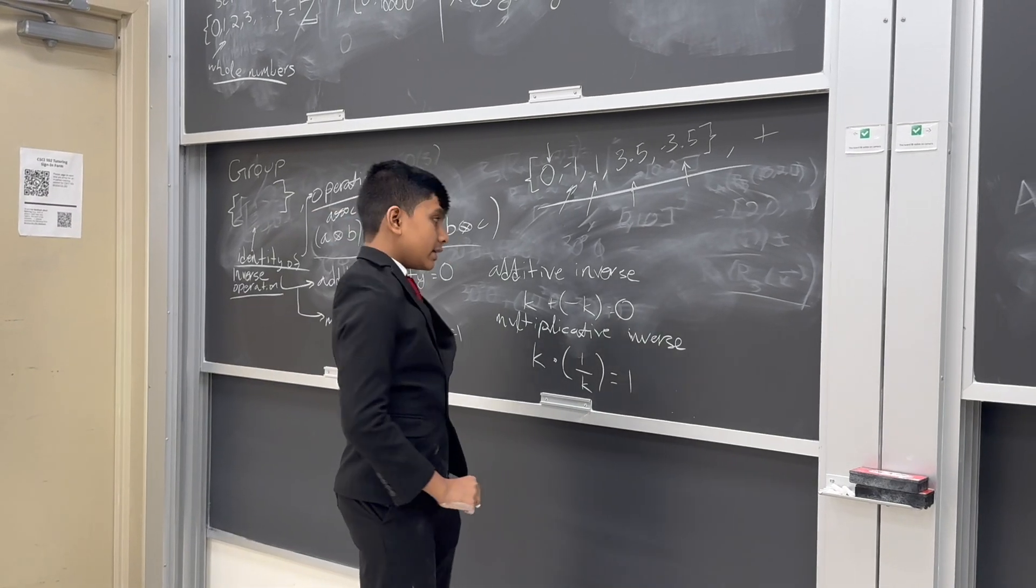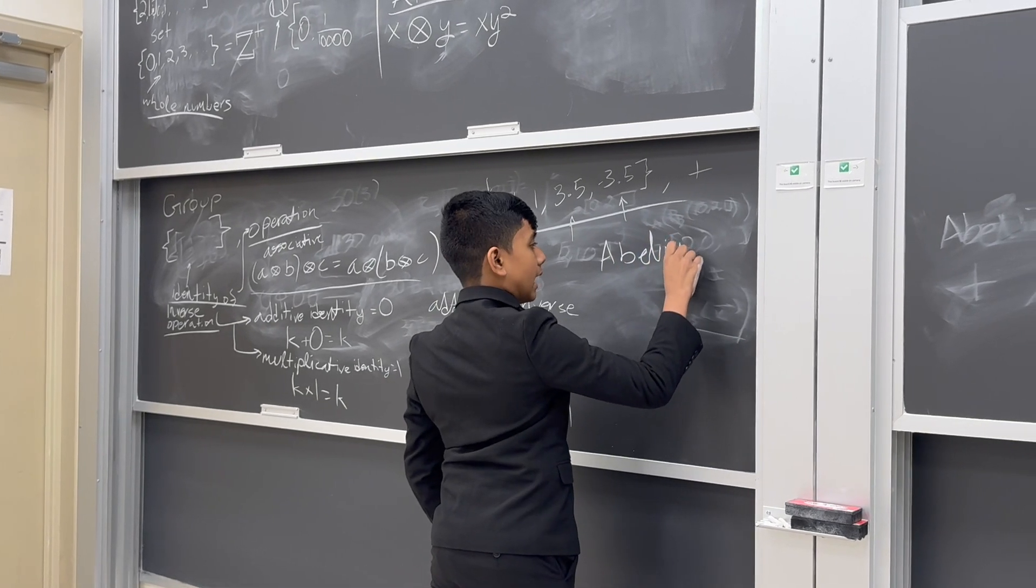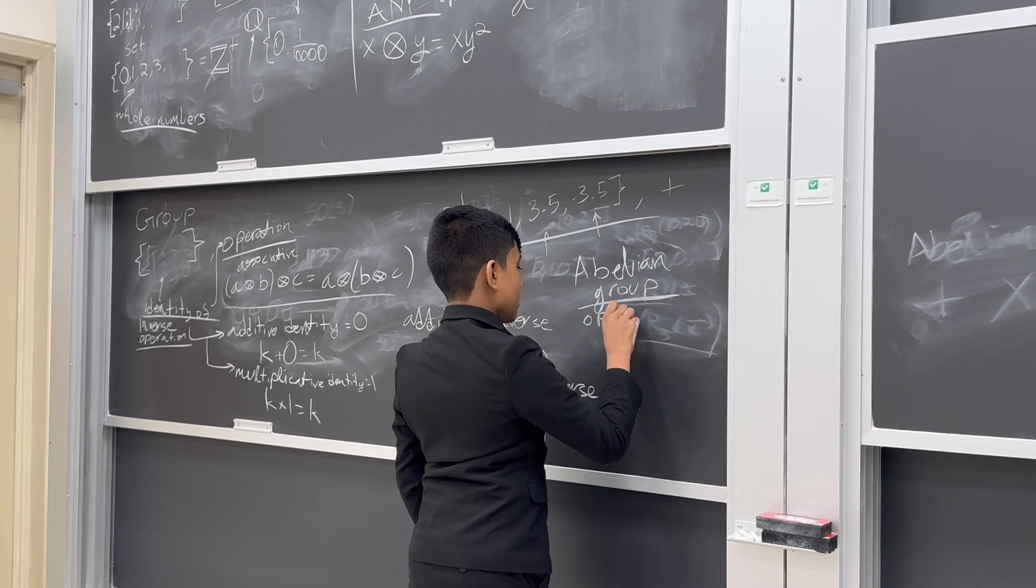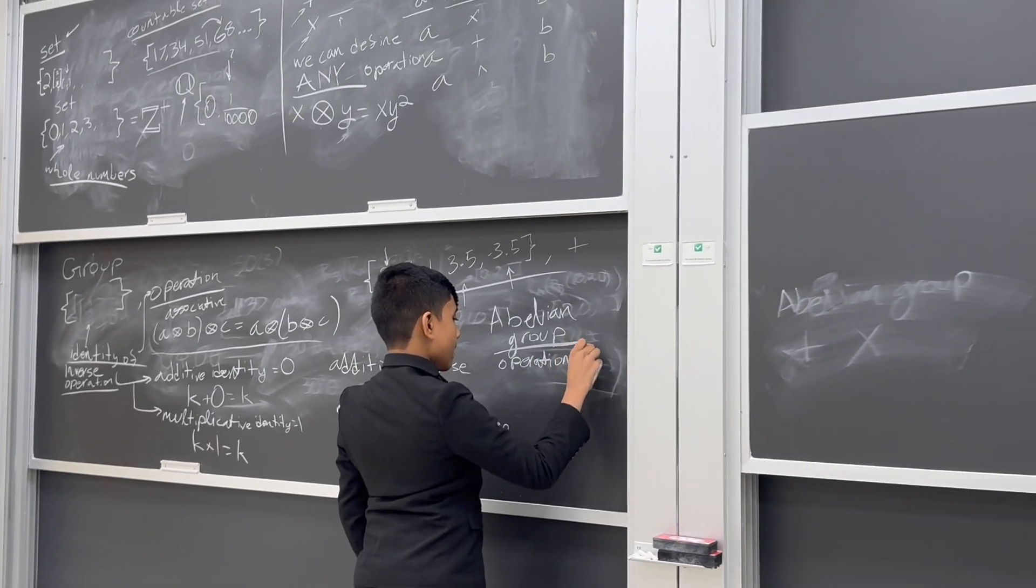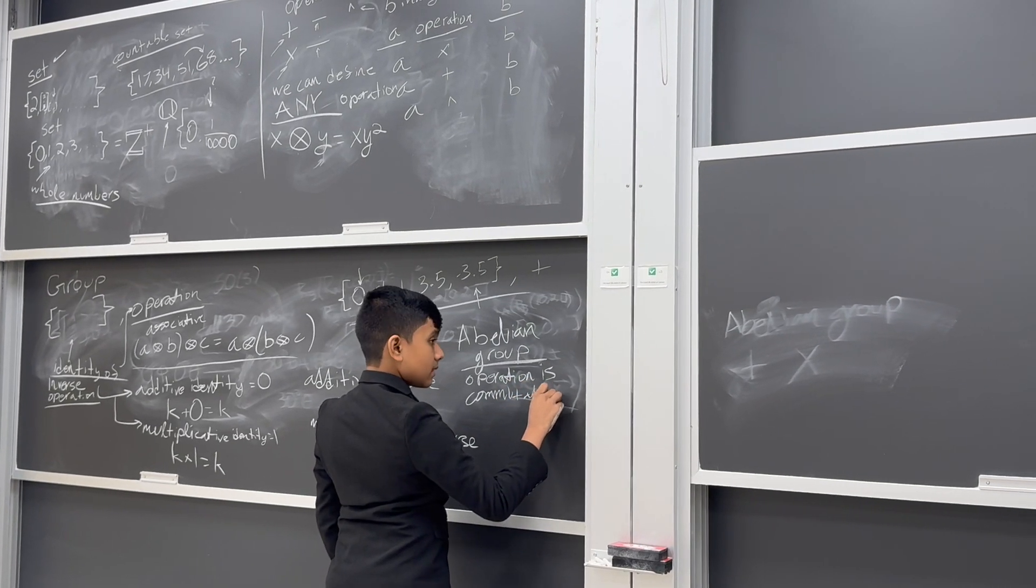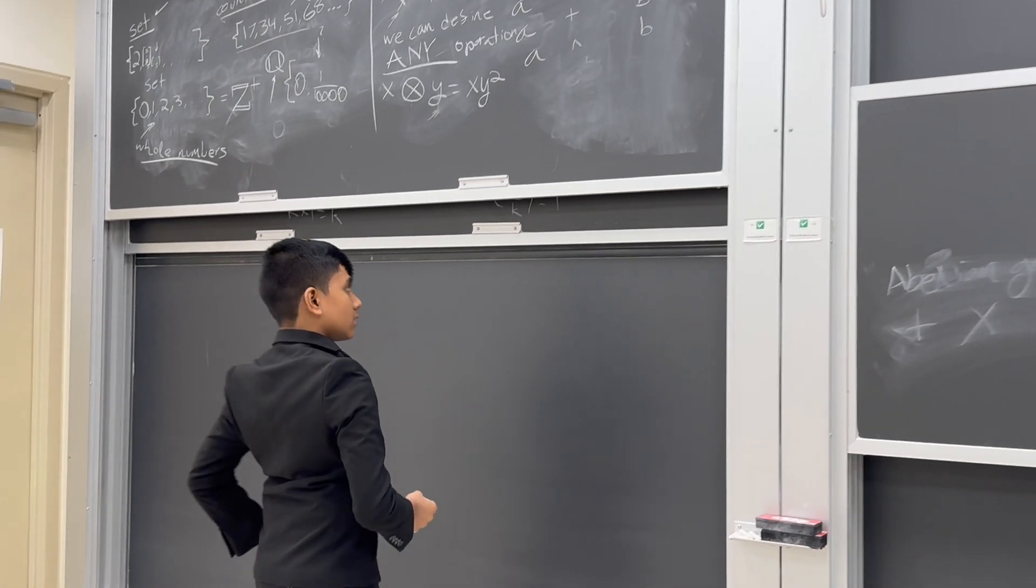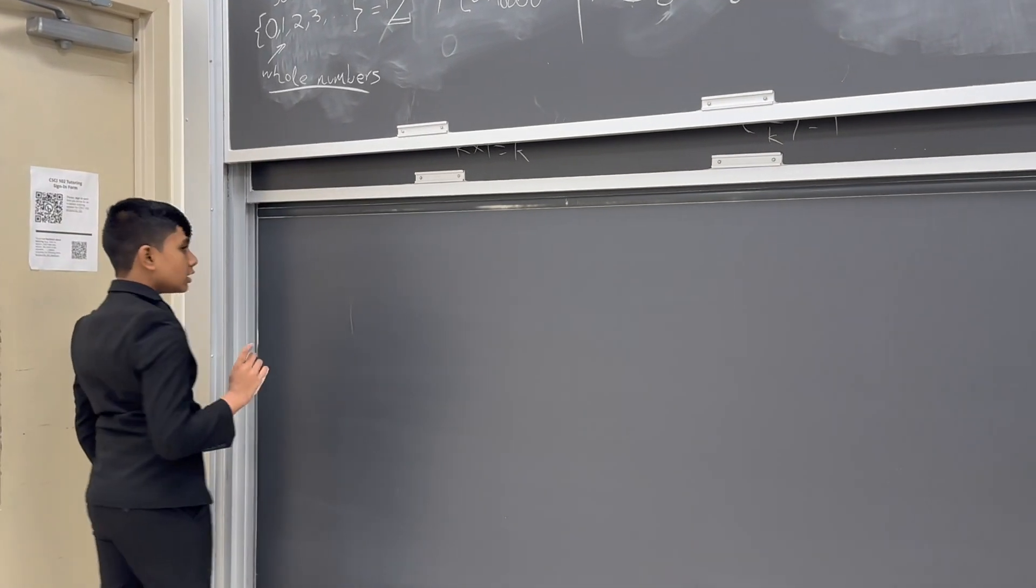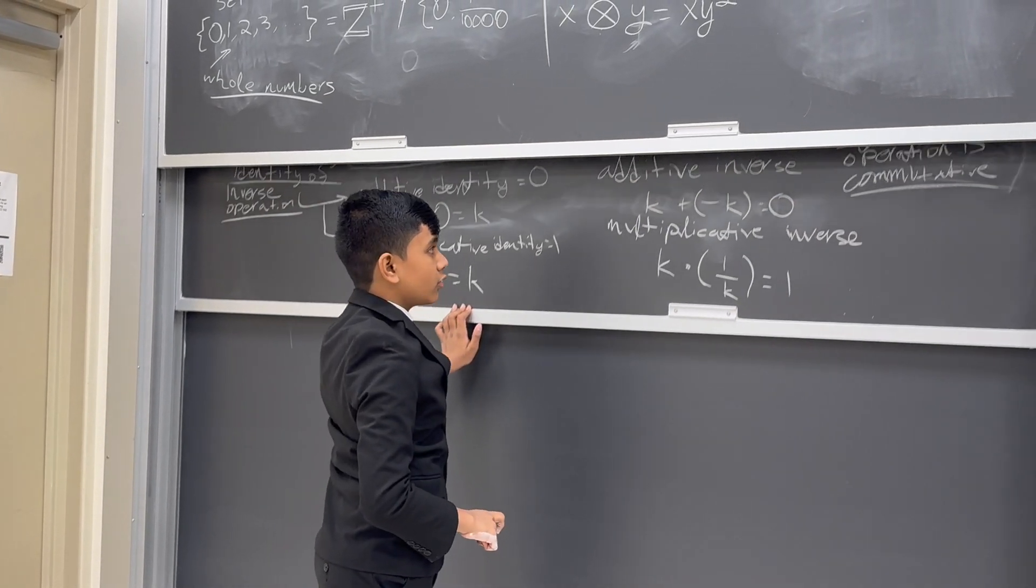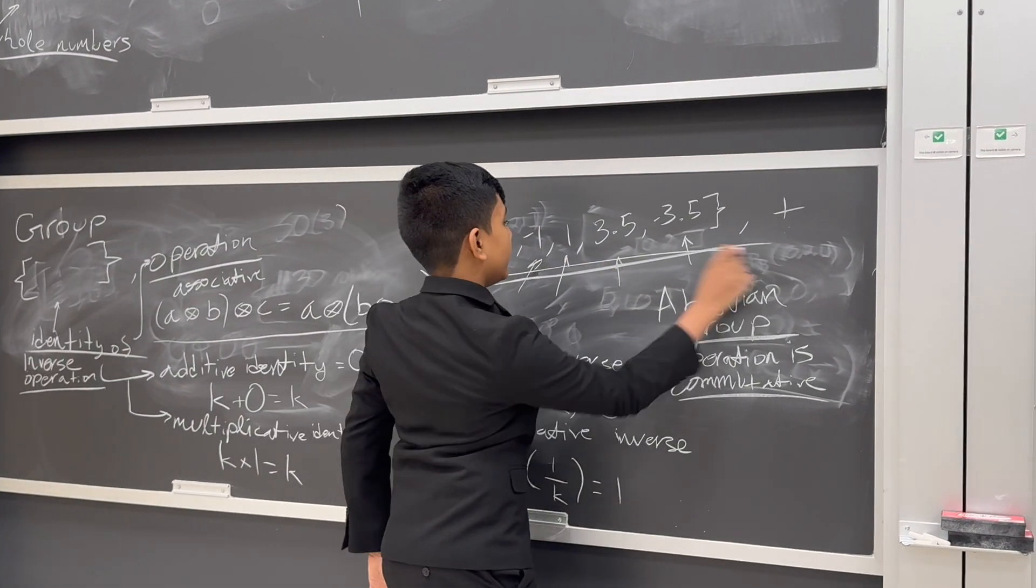Now, is it an abelian group? Well, an abelian group is when the operation is commutative. Wait, I already just gave you an example of an abelian group. Addition right here, as you should all know, is commutative. So, this right here is an abelian group.